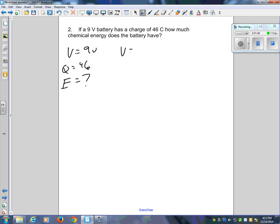Write the formula: V equals E over Q. The E version of that is E equals Q times V. So the charge is 46, voltage is 9, 46 times 9, 414 joules of energy. That is our final answer.